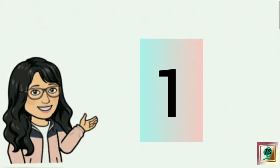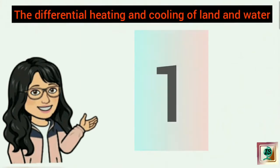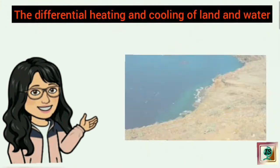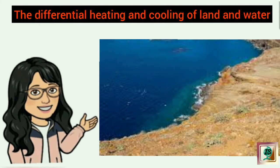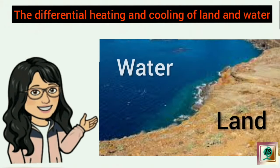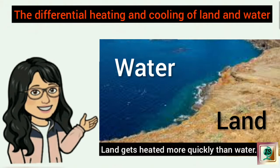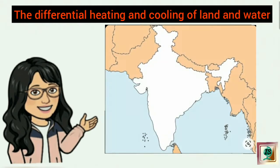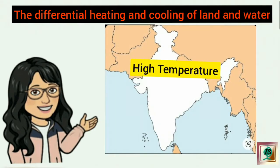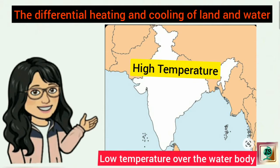The first factor is differential heating and cooling of land and water — that is, the rate of heating and cooling of land and water is different. Land gets heated more quickly than water, due to which high temperature is experienced over the land mass, whereas low temperature is experienced over the water body.